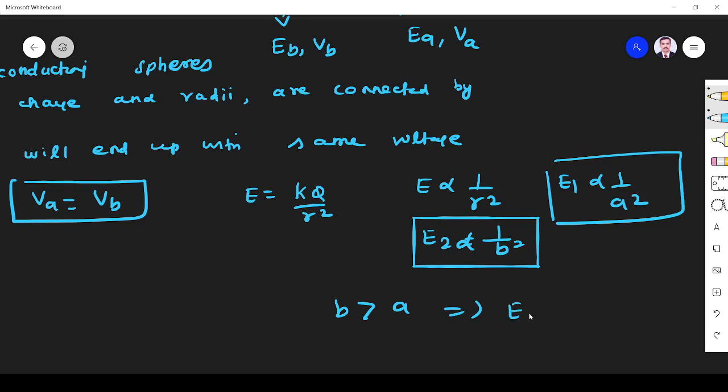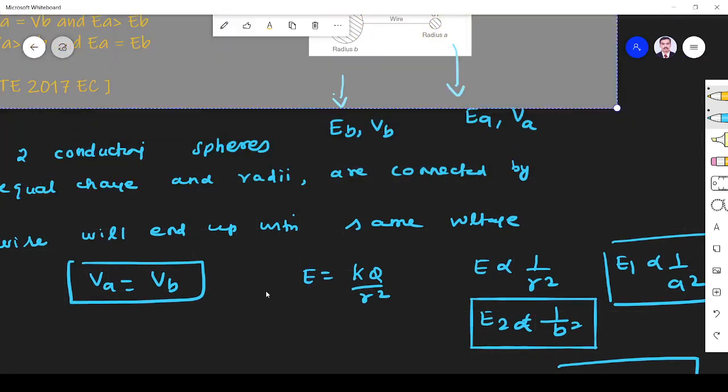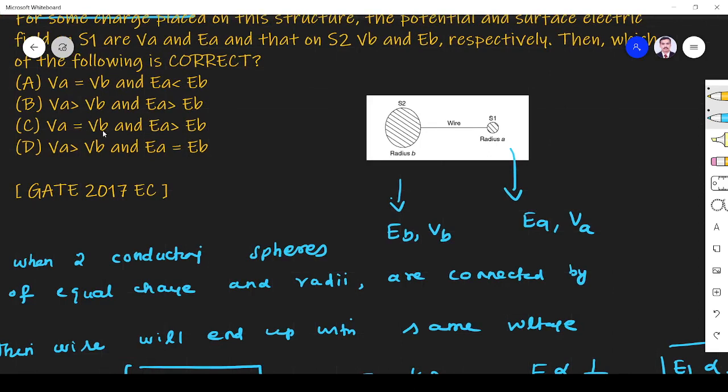So E2 must be less than E1. So what is the answer? Let us see. The potential is same and E2 must be less than E1. E2 is nothing but this one, so that is EB.